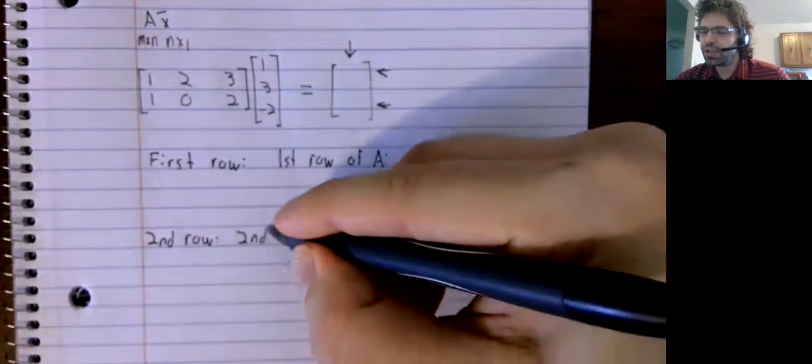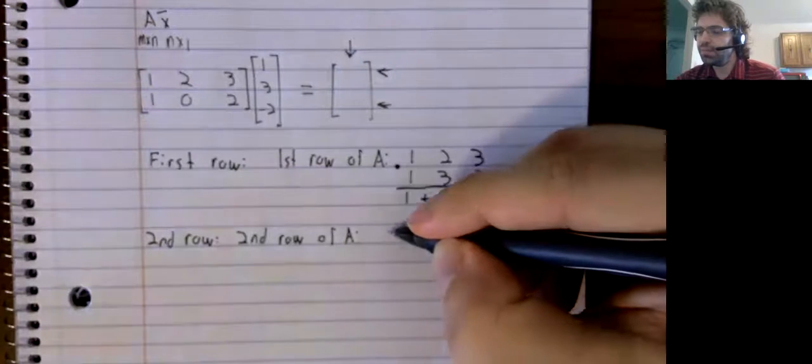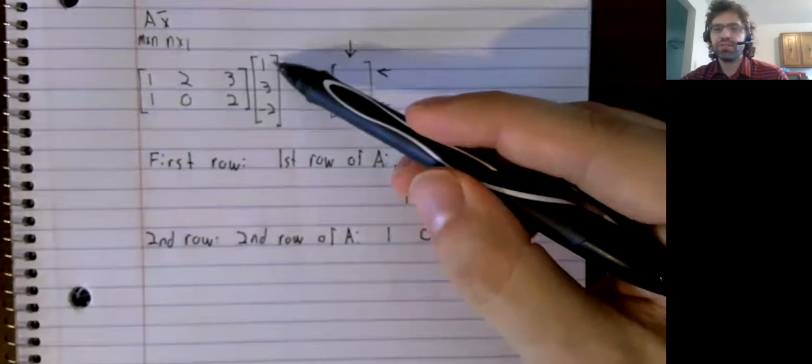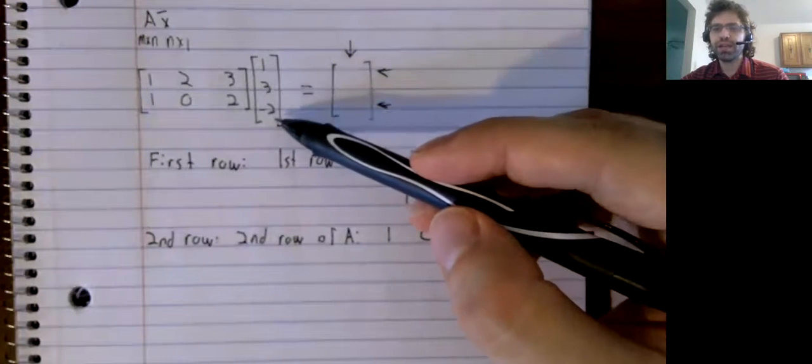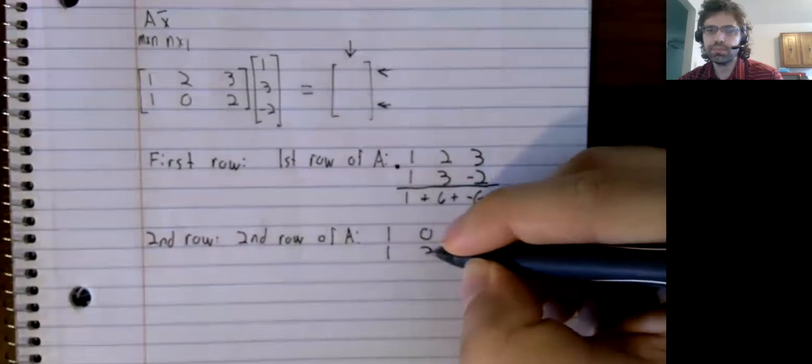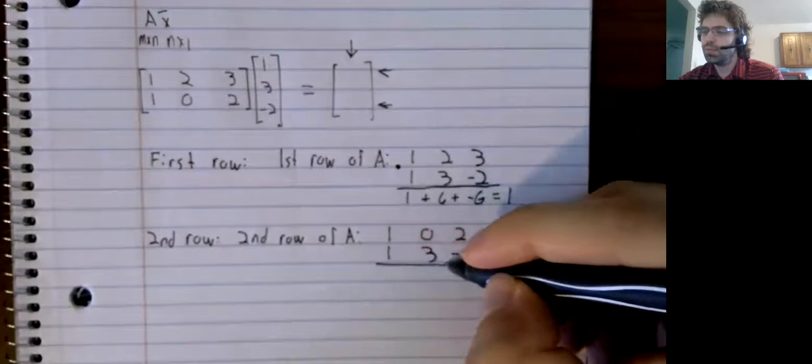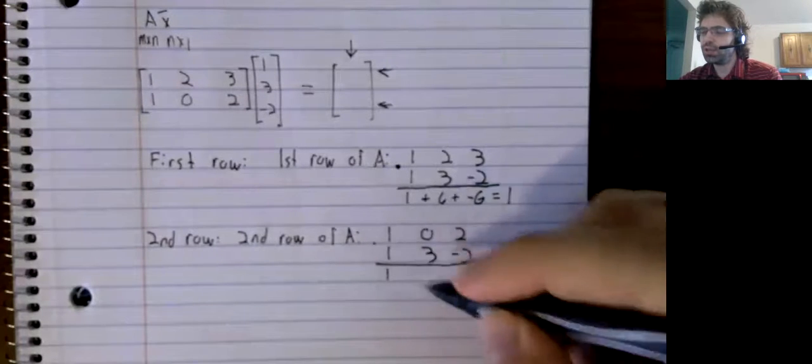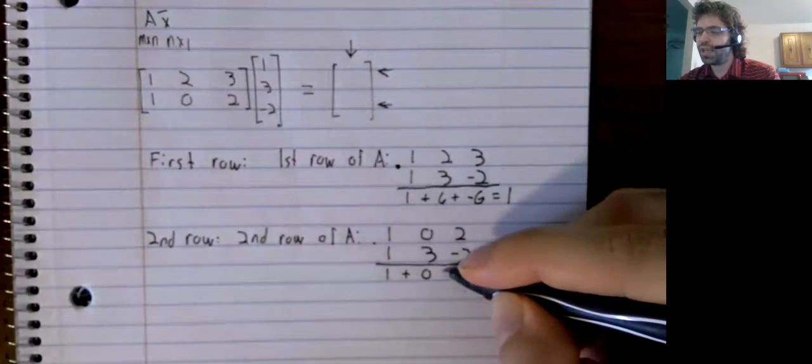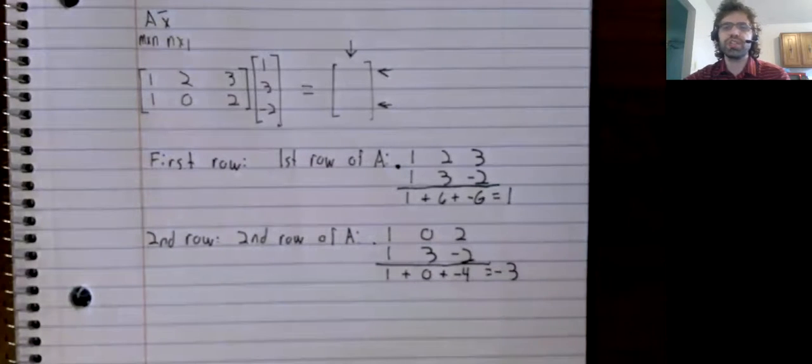To get the second row, we take the second row of A, write the entries of the vector in order, multiply each of these in turn, and add the resulting numbers.